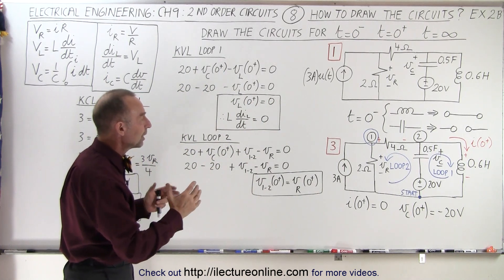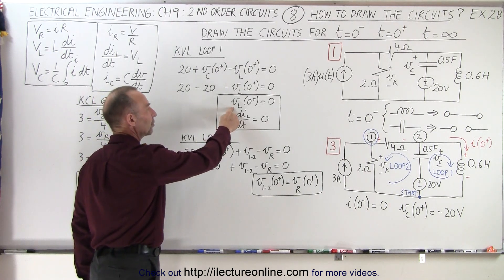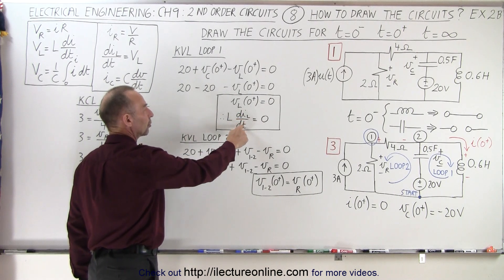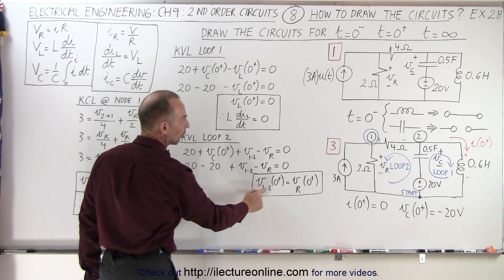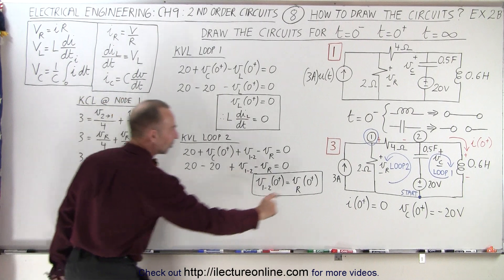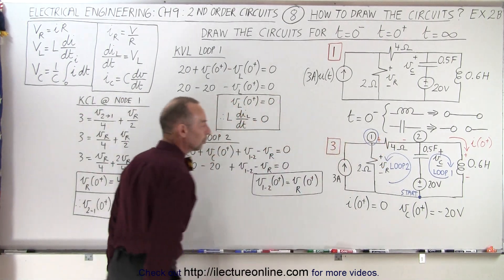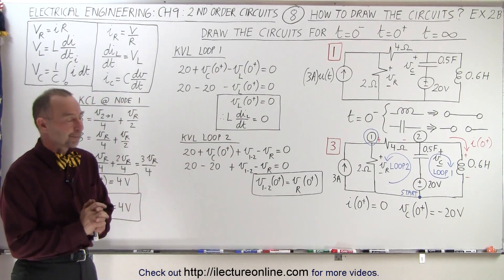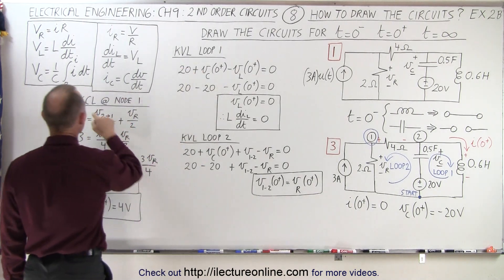Now what we're going to try to do is understand what else is happening. We're going to calculate the voltage across the inductor right after the event started, the change in current through the inductor as a function of time, the voltage between the two nodes, and the voltage across the resistor. We're going to use the KVL and KCL rules to do all of this.